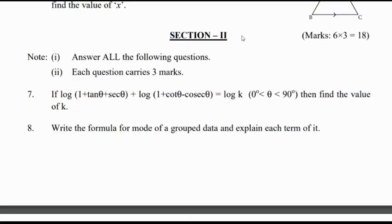Let us see Section 2. In Section 2, we have 6 questions. Each question carries 3 marks, and the total weightage for this section is 18 marks. We have to attempt all the questions — there is no internal choice in Section 2.